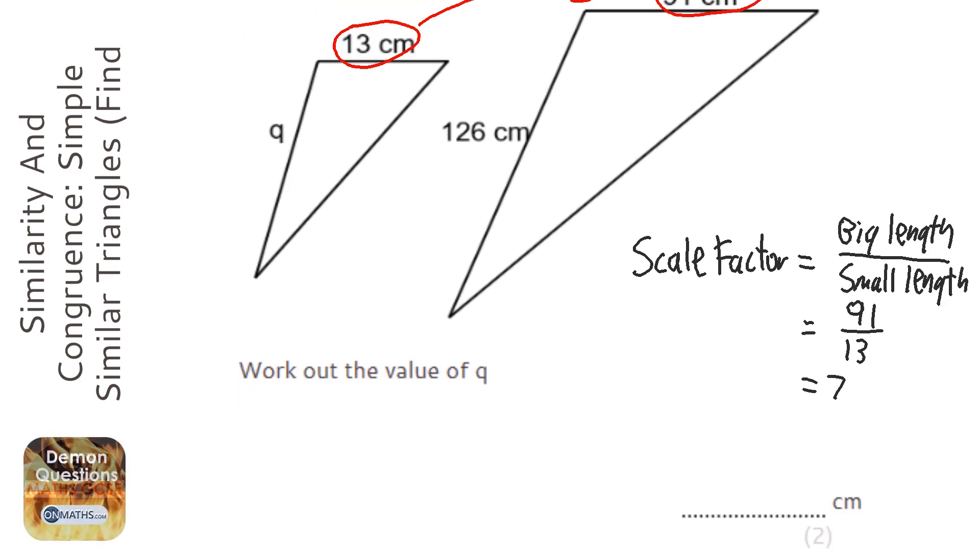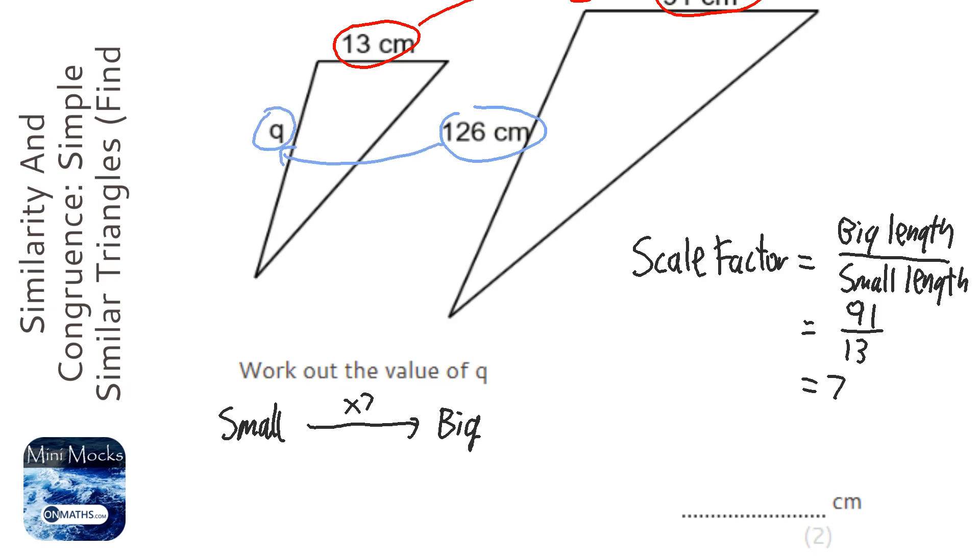Okay, now whenever we're going from small to big, we times by the scale factor, so we times by 7. But here we're going from big to small, so to do that, if we're going the other way, instead of times we're going to do the inverse, which is divide by 7.